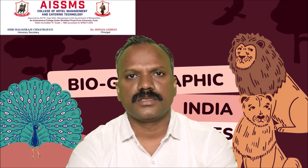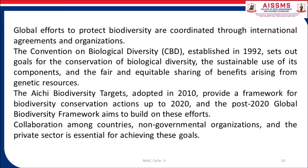Global efforts to protect biodiversity are coordinated through international agreements and organizations. The Convention on Biological Diversity, established in 1992, sets out goals for the conservation of biological diversity, the sustainable use of its components and the fair and equitable sharing of benefits arising from genetic resources. The Aichi Biodiversity Targets, adopted in 2010, provide a framework for biodiversity conservation actions up to 2020, and the post-2020 Global Biodiversity Framework aims to build on these efforts.